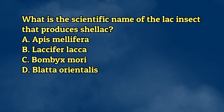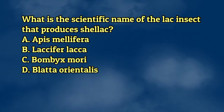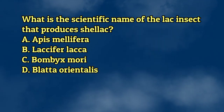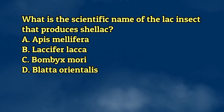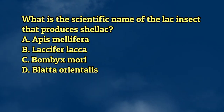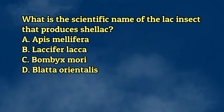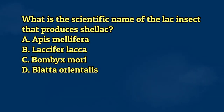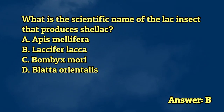What is the scientific name of the lac insect that produces shellac? A. Apis mellifera. B. Laccifer lacca. C. Bombyx mori. D. Blatta orientalis. The answer is letter B.